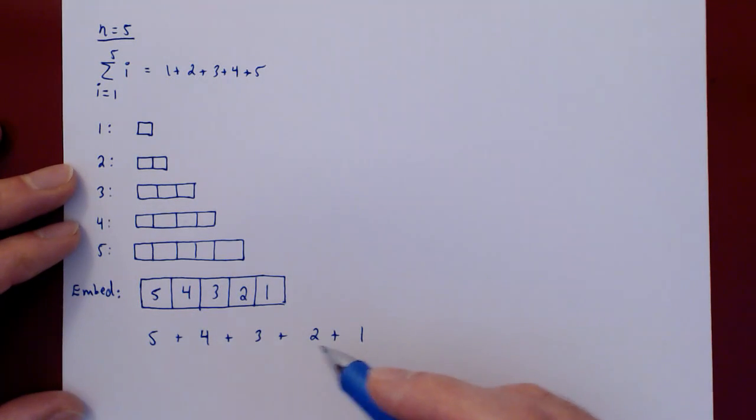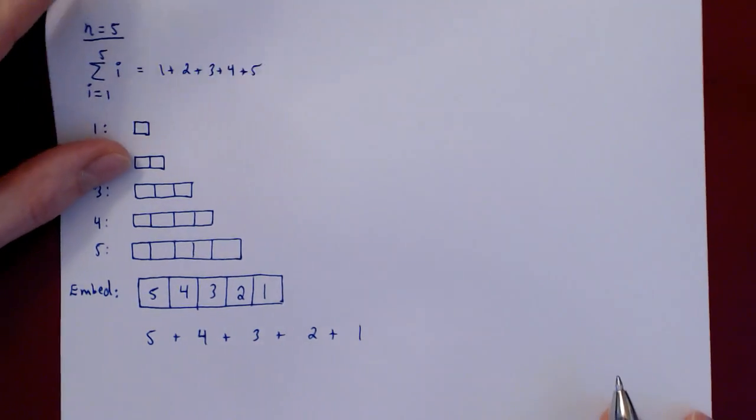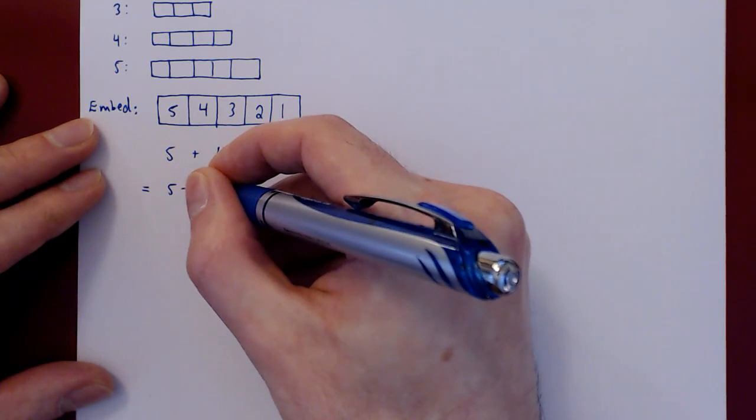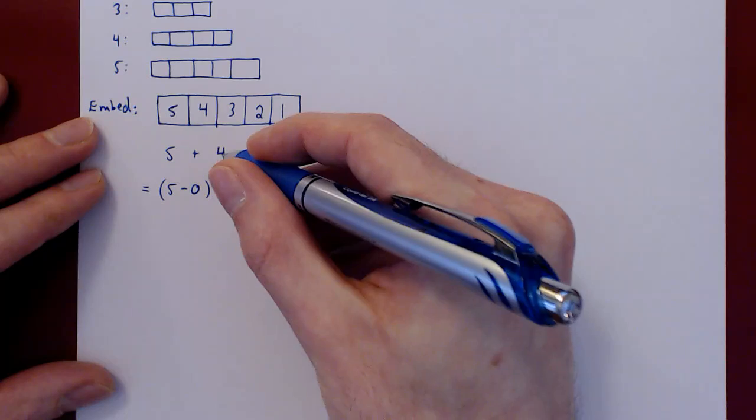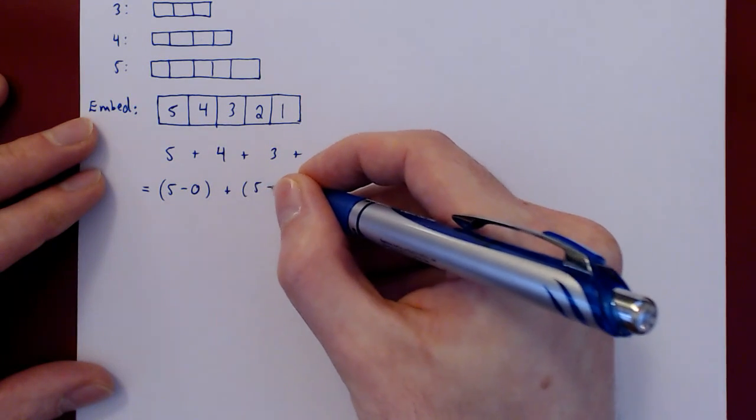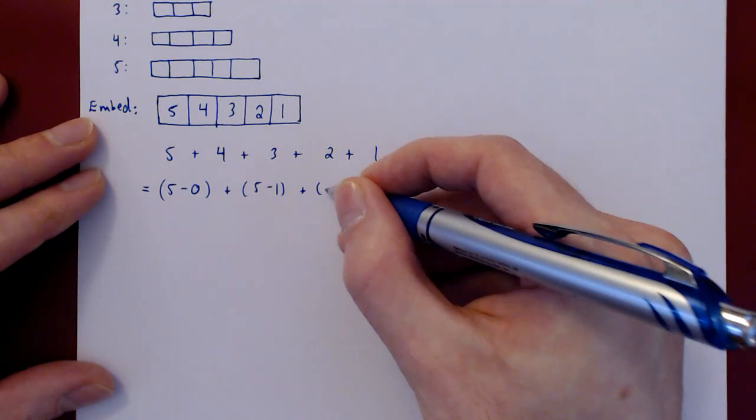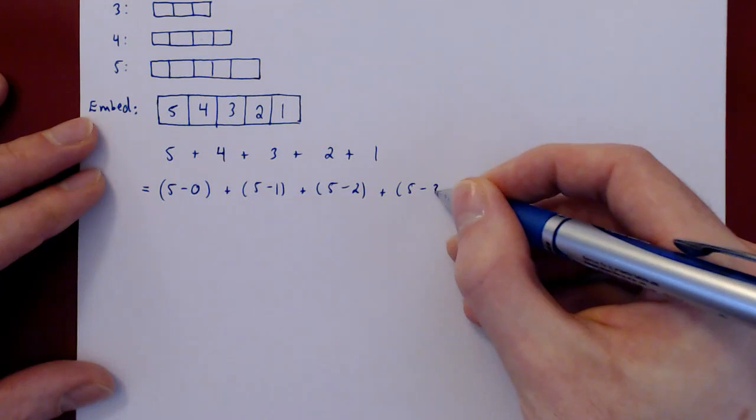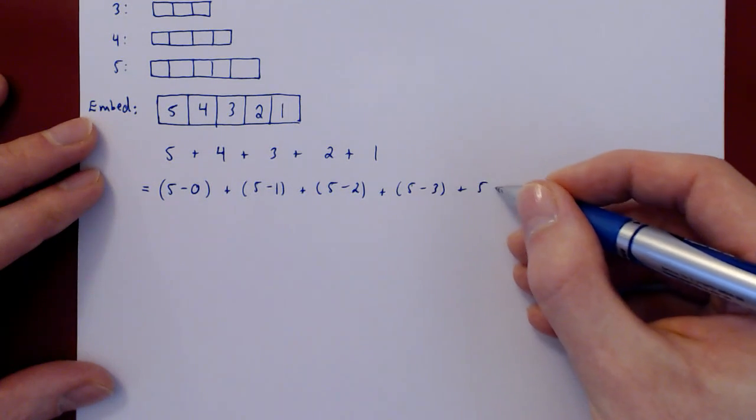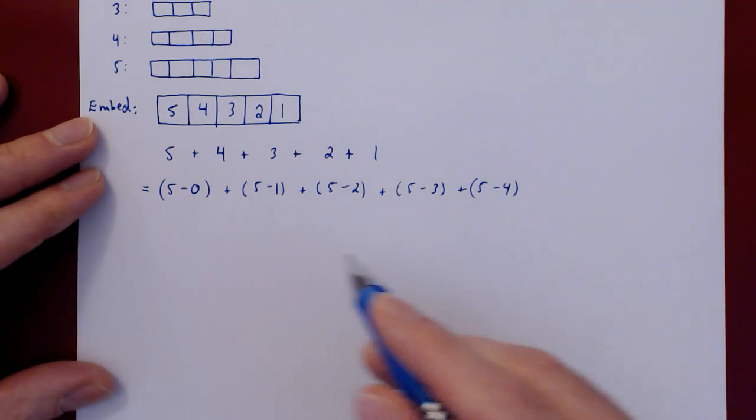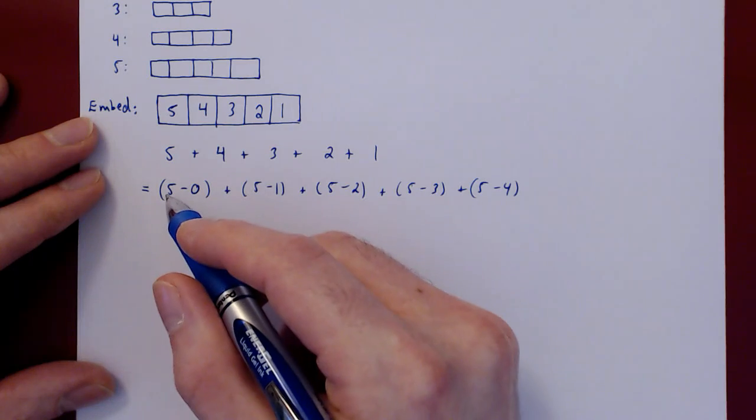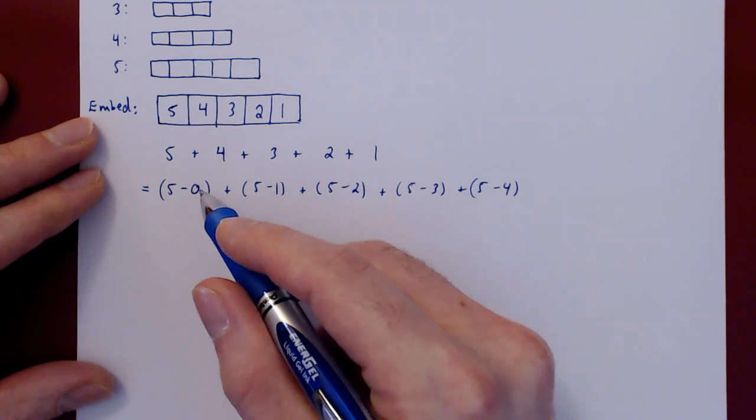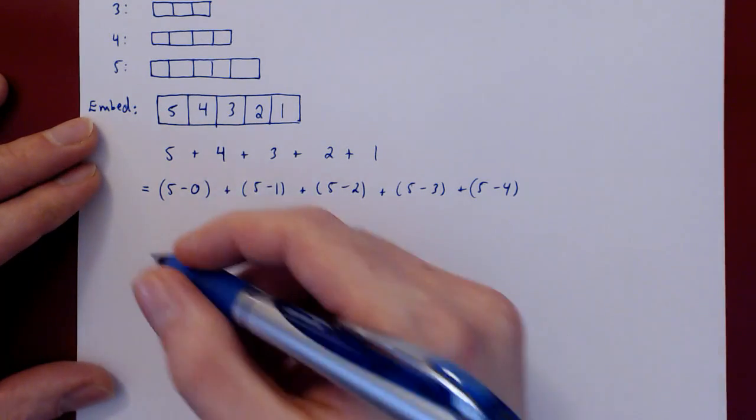This may not seem interesting, but what if we write this out in a pattern? So 5 is 5 minus 0. 4 is 5 minus 1. 3 is 5 minus 2. 2 is 5 minus 3. And 1 is 5 minus 4. Now you should see a pattern emerging. We are summing terms of the type 5 minus something. That something increases by 1 every time.